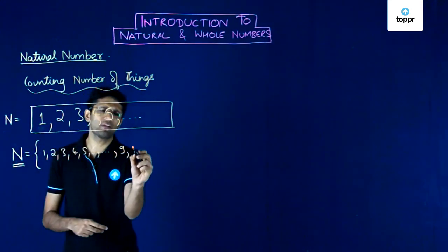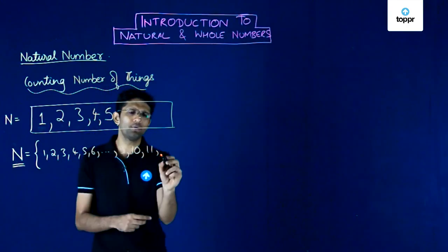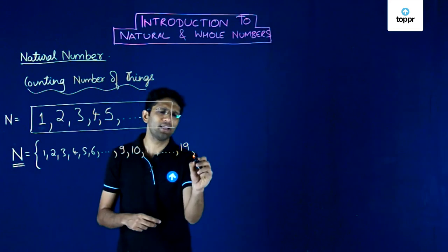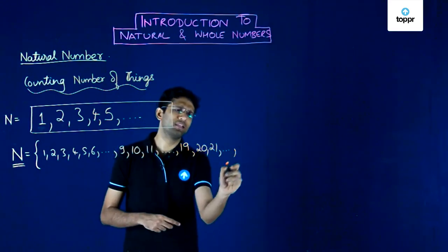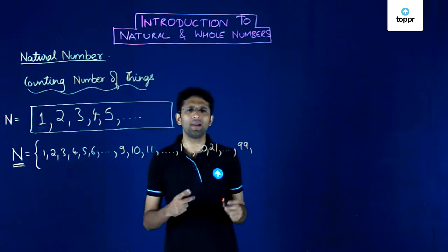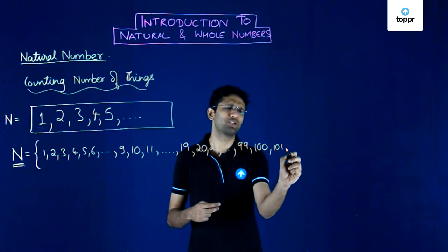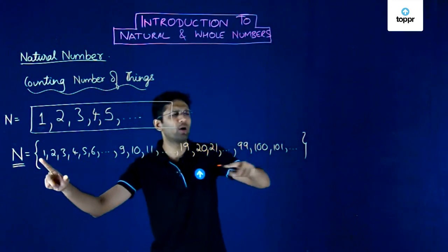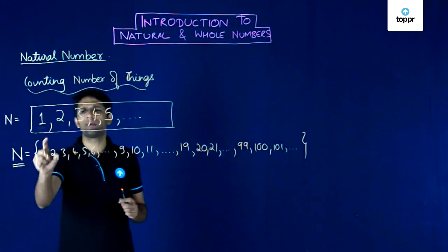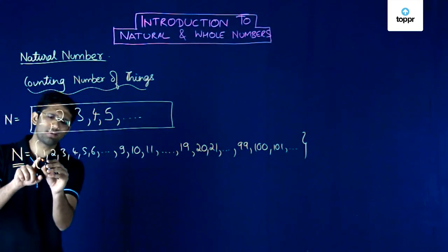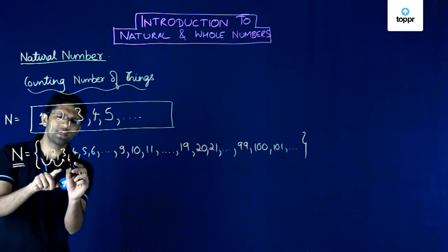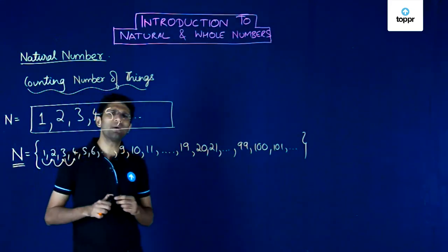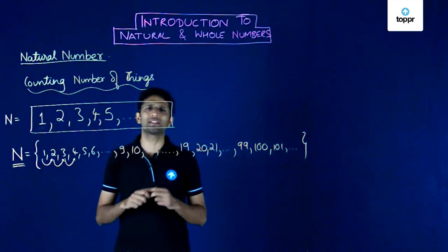Note that after 9, the next natural number is 10, and this list continues beyond 10 as well — 11 to 19, then 20, 21, and so on until 99, then 100, 101 and so on. This process of listing natural numbers is endless because they start from 1 but go on without ever stopping. The next natural number is obtained by adding 1 to the previous one: 2 = 1+1, 3 = 2+1, 4 = 3+1. These are called natural numbers because they come to our mind naturally when we are counting things.